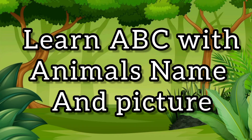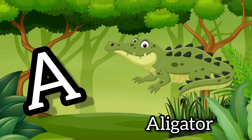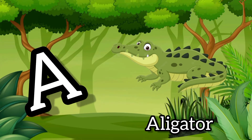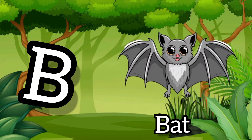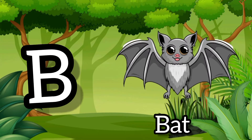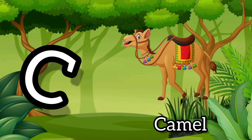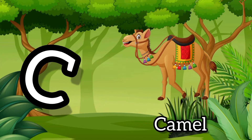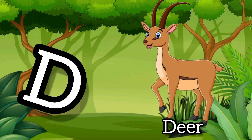Learn ABC with animal name and picture. A. A for alligator. B. B for bat. C. C for camel. D. D for deer.